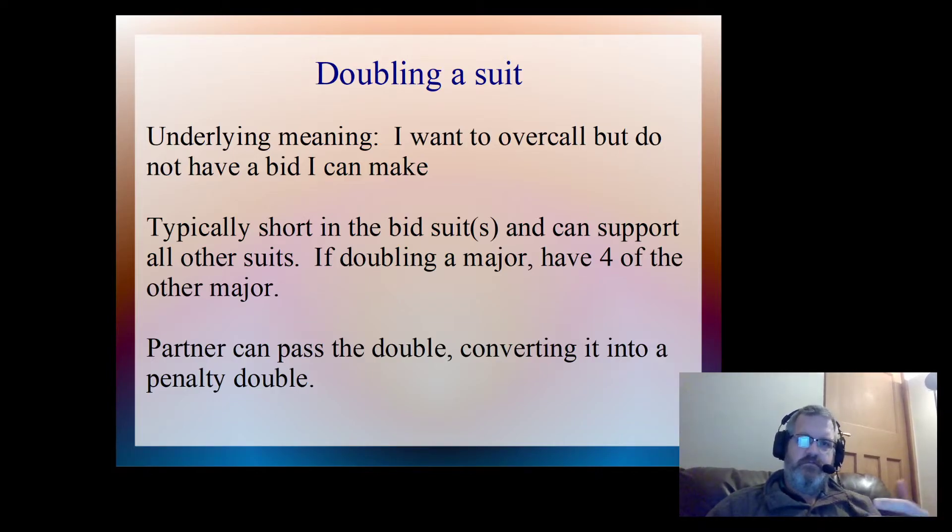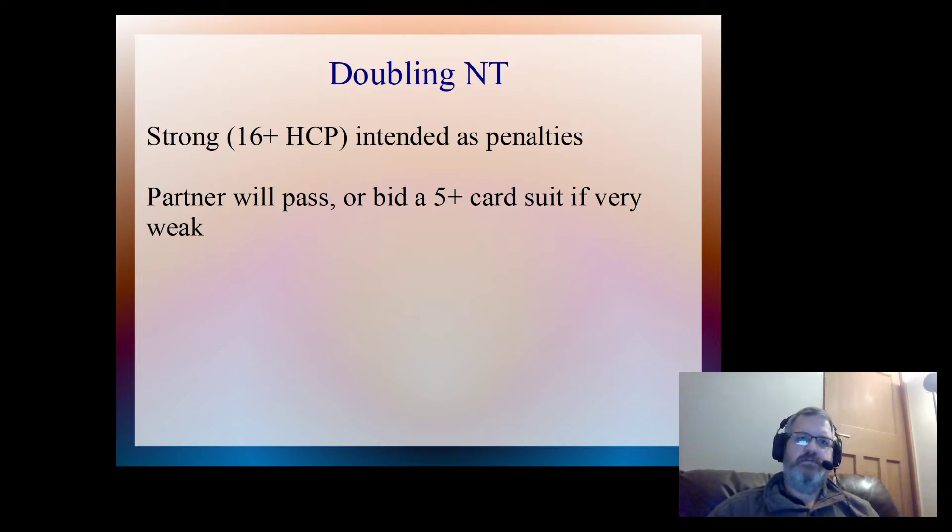So doubling a suit, this is the underlying meaning behind it. When we double no trumps, we claim that we're strong, 16 plus points, and we intend that to be as penalties. And partner will pass or they might bid a five card suit if they're very weak. You know, if you've got 16 points and your partner's got zero points, then one no trump would make easy peasy, and your partner is better to take you out of the one no trump that you doubled and put you into a suit contract.